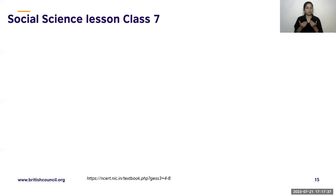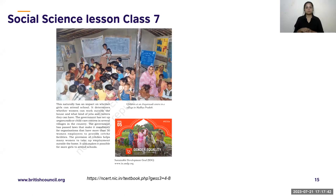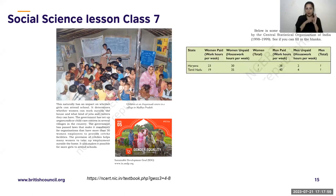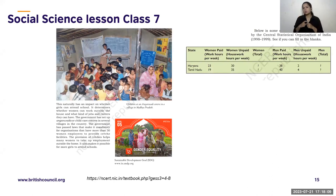Moving on to a Social Science lesson for Class 7: the lesson has good graphics including an image of an anganwadi — representing the empowerment of women to go out and work while their children are kept safely. Goal 5, Gender Equality, is already inserted there. There are statistics about paid and unpaid work for men and women. What other SDGs could we put in here?